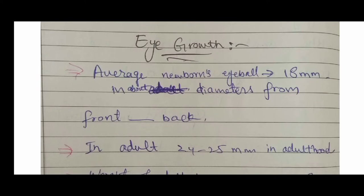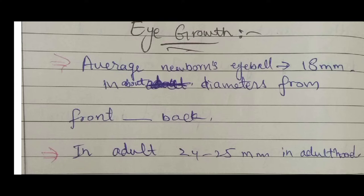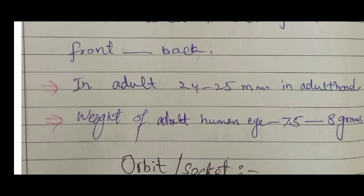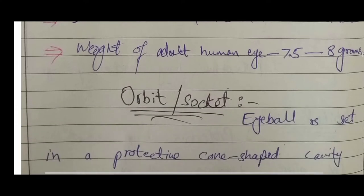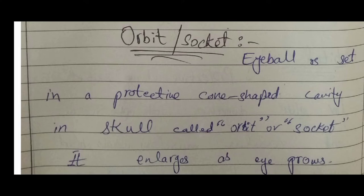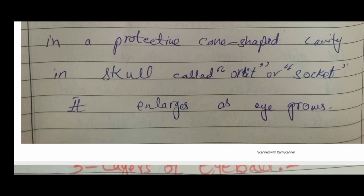In a newborn, the average human eyeball is about 18 millimeters in diameter from anterior to posterior. In an adult, it grows to 23–25 millimeters. Less than 23 mm or more than 25 mm is considered a pathological condition. The adult human eye weighs about 7.5 to 8 grams. The orbit is a protective cone-shaped bony cavity that enlarges as the eye grows.